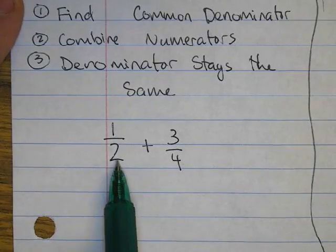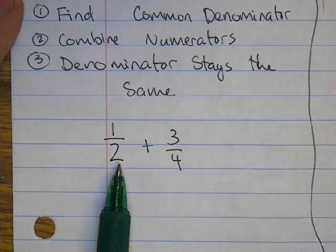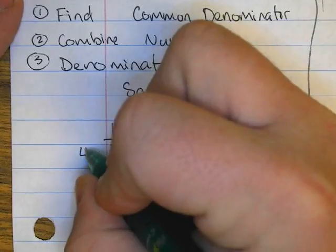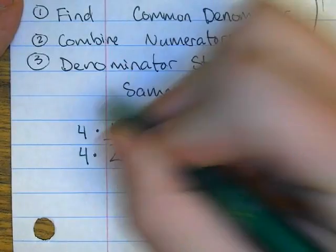by the other fraction's denominator. Since this fraction has two, I can multiply by four. Whatever I do to the bottom, I do to the top.